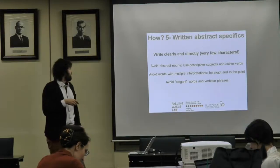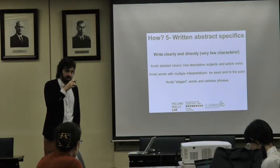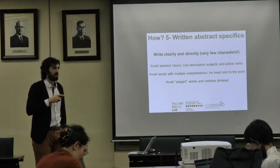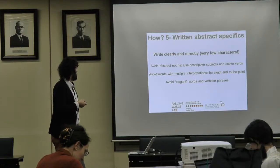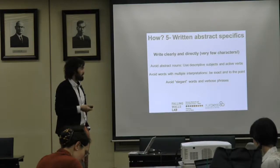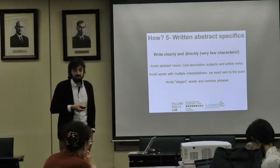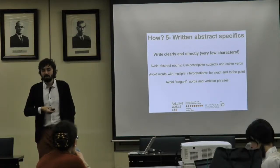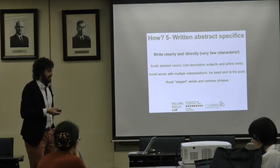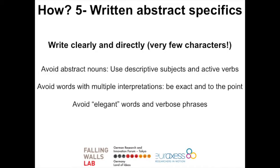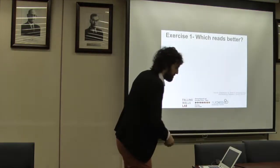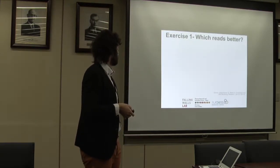Once again, for abstract specifics: in our case you have 200 characters for the problem and 200 characters for the solution — it's really short. You have to write things that are exact, clear, and descriptive. In English and many other languages, you can write in very indirect, long-winded ways — avoid these. Words with exact meanings are easier to understand. Avoid elegant or verbose words. I have a couple of short exercises for you — let's read these sentences.